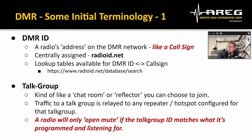You can only have one person using a DMR ID at any one time on the DMR network, otherwise things get very broken. Next up, we have talk groups. Think of a talk group as a chat room or reflector — it's a way of discriminating between groups of conversations. Traffic to a particular talk group from a radio is relayed to any repeater or hotspot configured for that talk group.